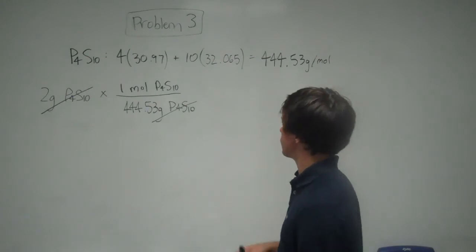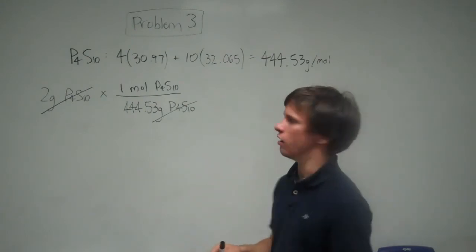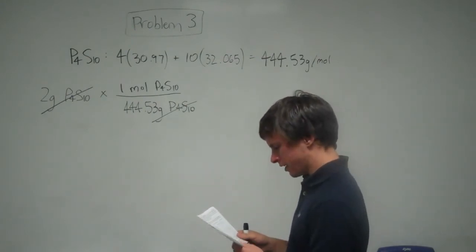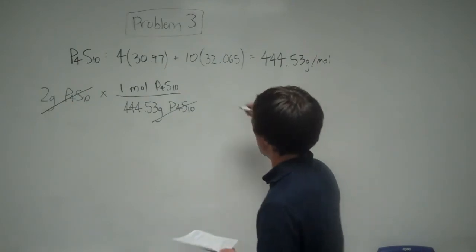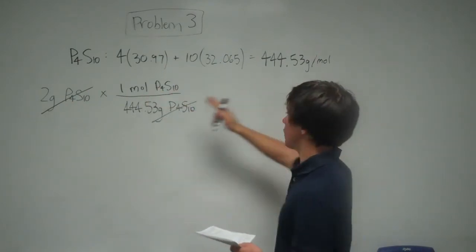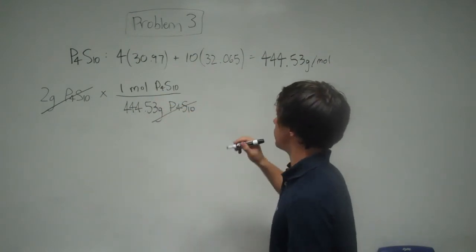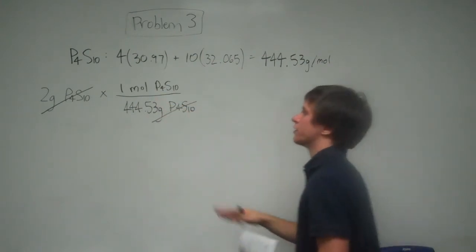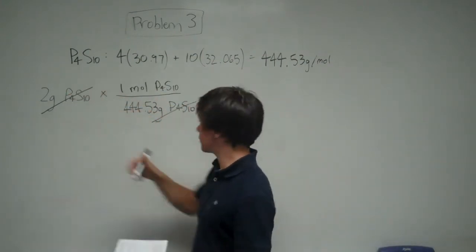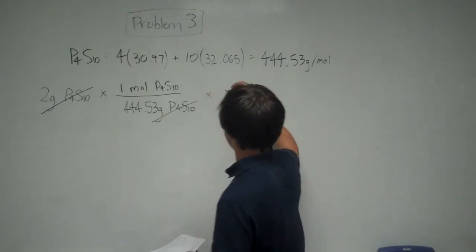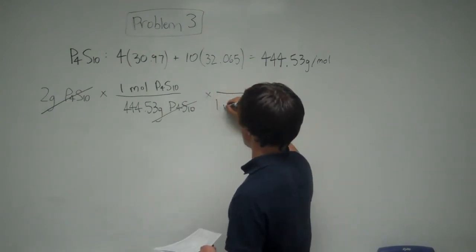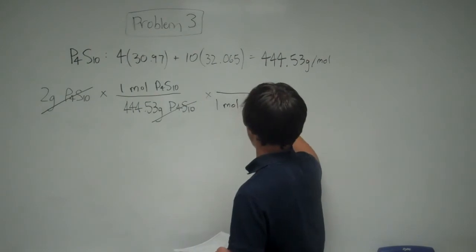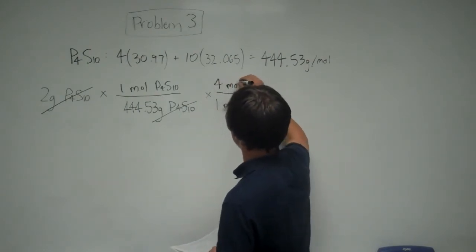The next thing, we're trying to get to atoms of phosphorus. So we can convert from moles of P4S10 to moles of P. And you'll notice, if you look at the molecular formula, for every one mole of P4S10, we have 4 moles of P.